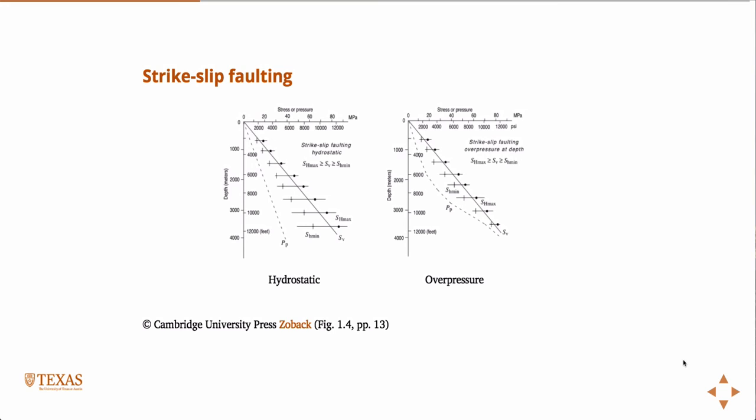We're going to talk about mechanisms for overpressure, but it comes from compartmentalization of the reservoir. Things like disequilibrium compaction — this phenomenon is quite common in the Gulf of Mexico. That's actually why the Gulf of Mexico is quite productive: deposition into the Gulf via the Mississippi River is faster than the fluid can diffuse away. According to Darcy's law the fluid migrates away, but if deposition happens faster than it can diffuse, it can squeeze the rock and cause an overpressure scenario.